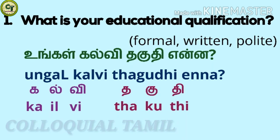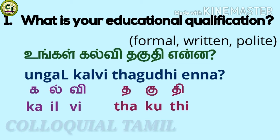To ask someone's educational qualification formally, you say 'unngal kalvi tagthi enna.' This is the formal written and polite form. You already know 'unngal' and 'enna' from previous videos. For 'kalvi': ka, a short stone letter, il, a consonant, vi, a short stone letter — together 'kalvi.' 'Kalvi tagthi' means educational qualification. So one more time: 'unngal kalvi tagthi enna.'